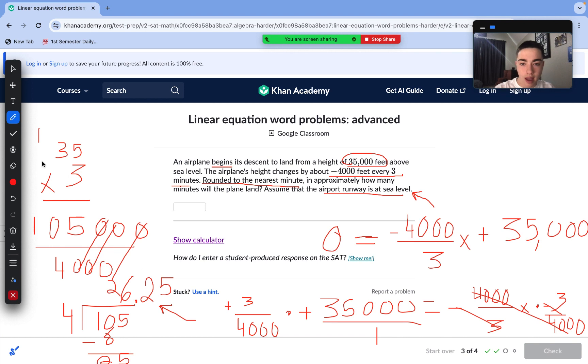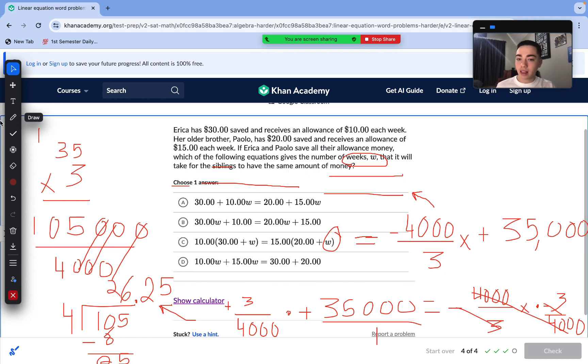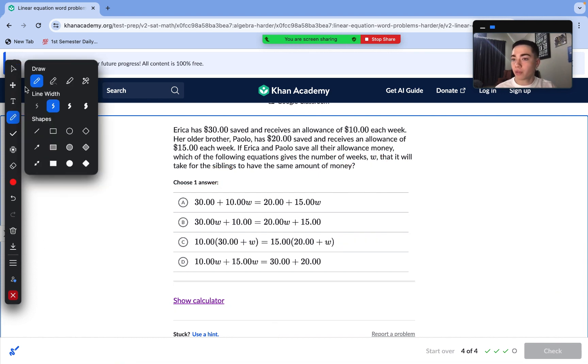26.25 is a decimal value. But we are asked to round to the nearest minute. Nearest minute here is 26. So, approximately, it will take 26 minutes for the plane to land on that runway. We got it correct. This was a little bit of a more difficult question, requiring a little bit of inference and also calculations here. But, with all of these SAT math questions, they are achievable.